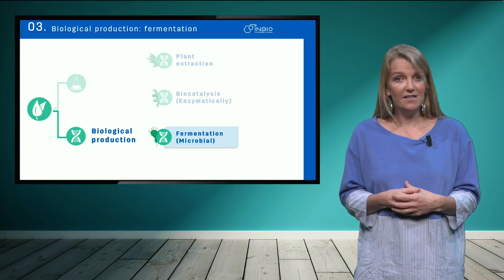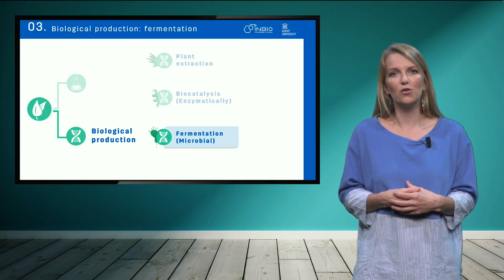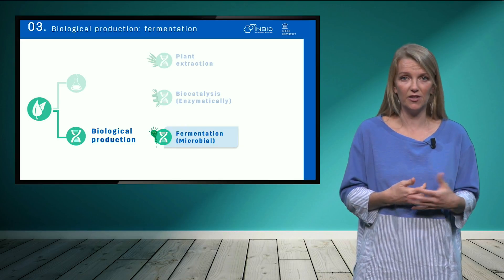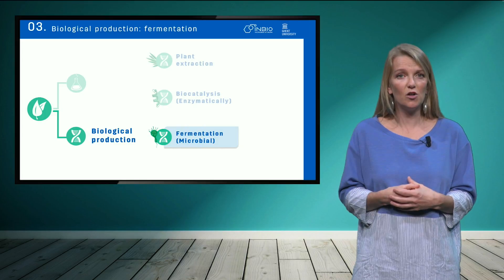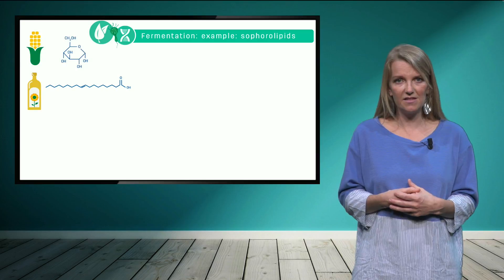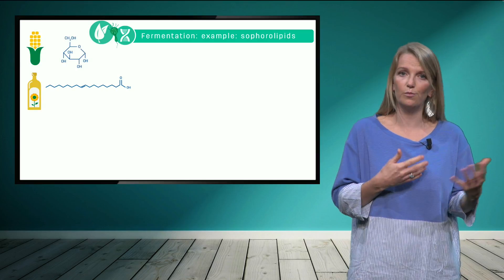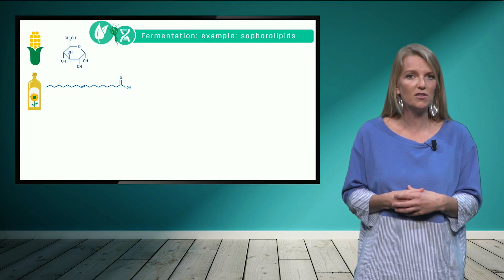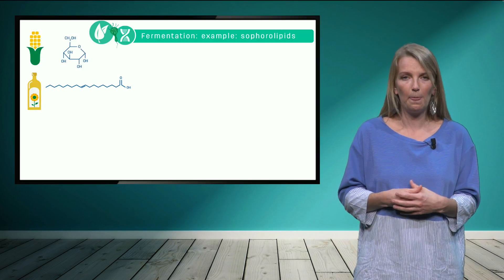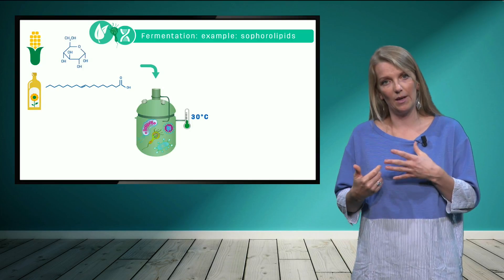Last but not least, a third biological production method for biosurfactants is by using microorganisms — such as yeast, fungi, or bacteria — in a process called fermentation. An example are sophorolipids produced by yeast. Here the same types of substrates are used as for the other types of biosurfactants, so for example sugar and oil — glucose and fatty acids. These are combined in a bioreactor, again instead of a chemical reactor.